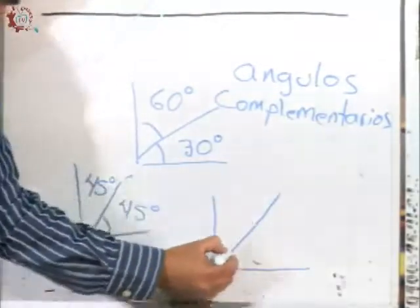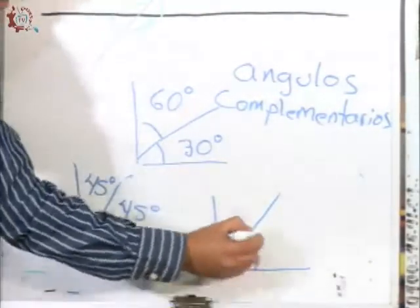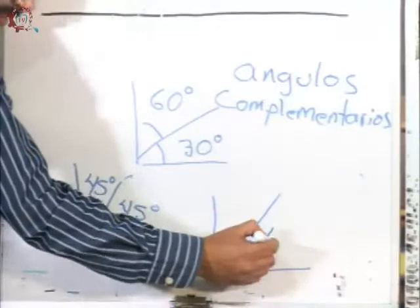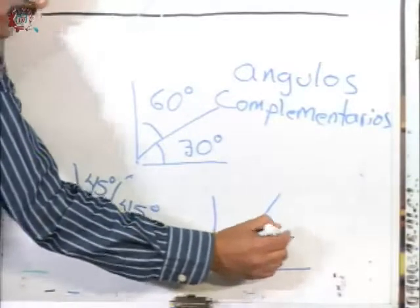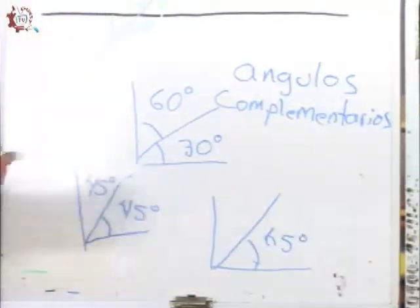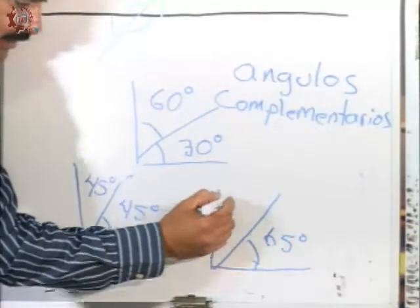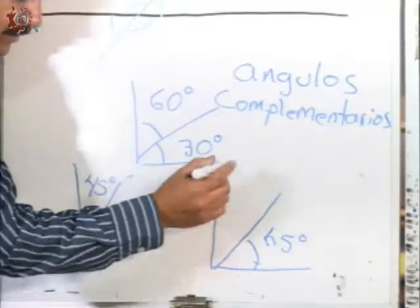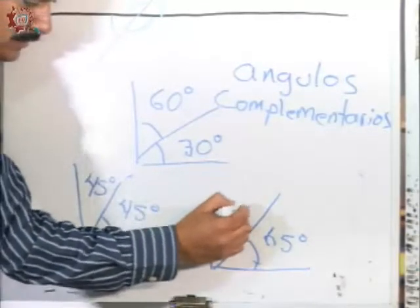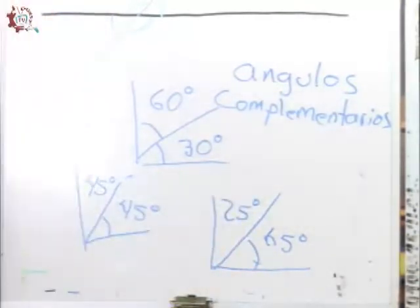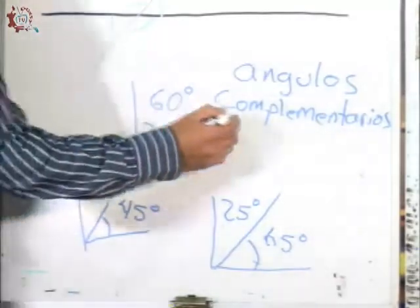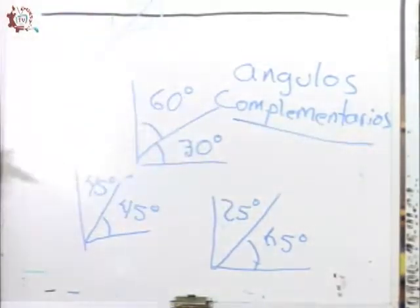Si este ángulo mide 65 grados, su complementario es de 25 grados. Entonces ahí tenemos el concepto de ángulos complementarios.